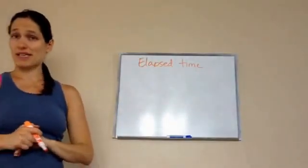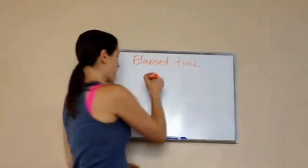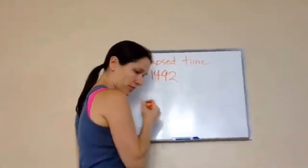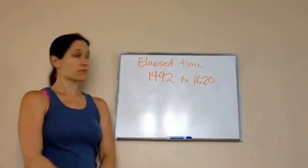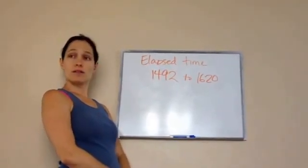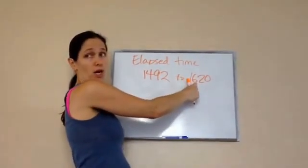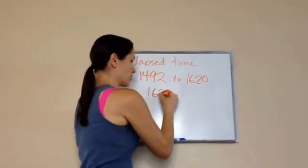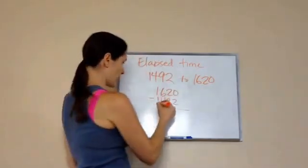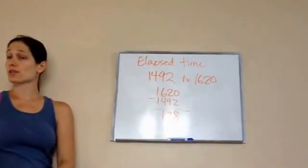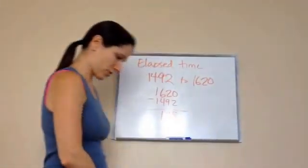Here's another question dealing with time or dates. How many years was there from 1492 to 1620? You put the larger number on top: 1620 minus 1492. And that answer is 128. So 128 years has gone by from 1492 to 1620.